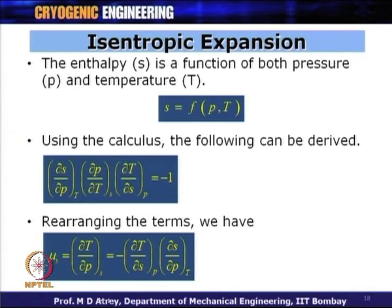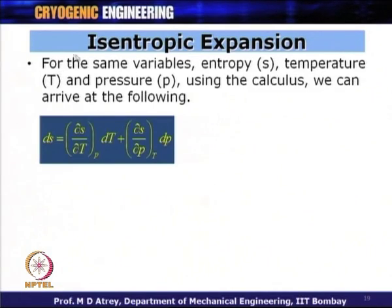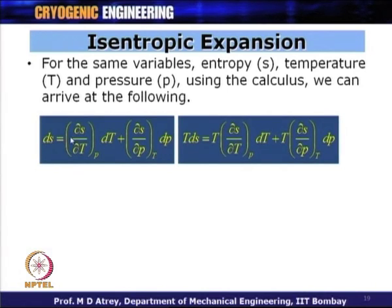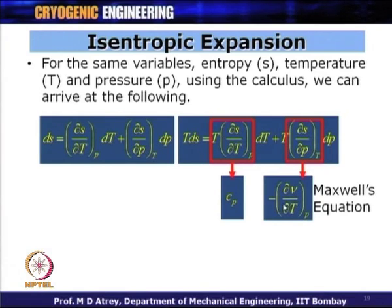Writing DS in terms of partial derivatives of T and P, multiplying by T, we find that T(del S/del T)_P equals C_P, and (del S/del P)_T equals minus (del V/del T)_P from Maxwell's equations. Substituting these, delta T/delta S at constant pressure is 1/C_P, and delta S/delta P at constant temperature is del V/del T at constant pressure.